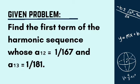Based on our given problem, we need to find the first term of the harmonic sequence. In order for us to get the value of the first term, we need to use the formula aₙ = 1/(a₁ + (n-1)d).